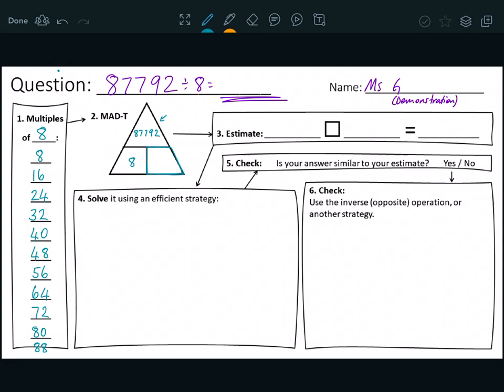So my estimate, I need to find a friendly number that is similar to 87,792 that I can divide by eight. So 88 is a lovely number I can use because that's similar to 87,000. So I'm going to go 88,000 is a friendly number that can be divided by eight, because I know eight 11s are 88. So eight 11s are 88, and that was multiplied by 10, 10, and 10. So I do that to the other side as well. So my estimate is 11,000.